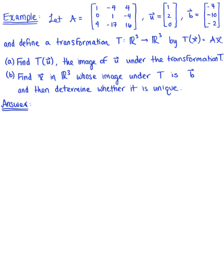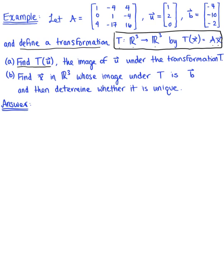In this example, we have a 3 by 3 matrix A, and we have two vectors, vector U and vector B. We're also going to define a transformation T from R³ to R³ by a matrix transformation, so the image of vector x under T equals matrix A times vector x. We're asked to find the transformation of vector U — the image of vector U under T — and in part B, find a vector x in R³ whose image under T is vector B, then determine whether or not it's unique and explain why.